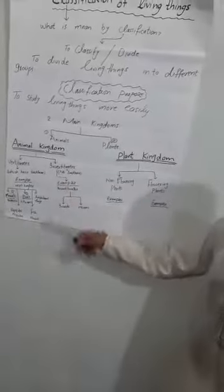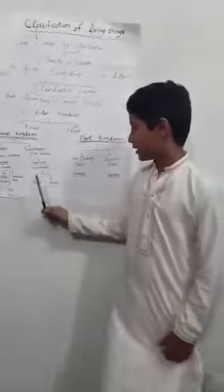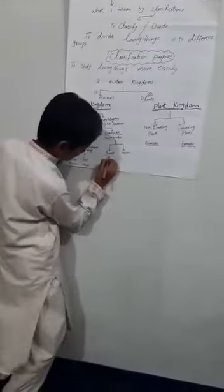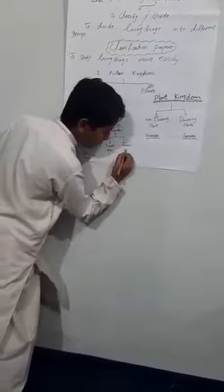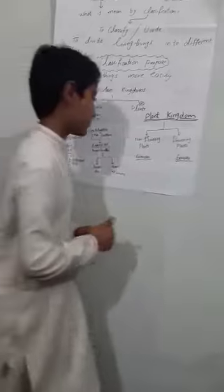Now let's go to invertebrates. What is invertebrate? There are two examples: insects and worms. For insects, we write ants — the example is ant. And for worms, we write tapeworms.